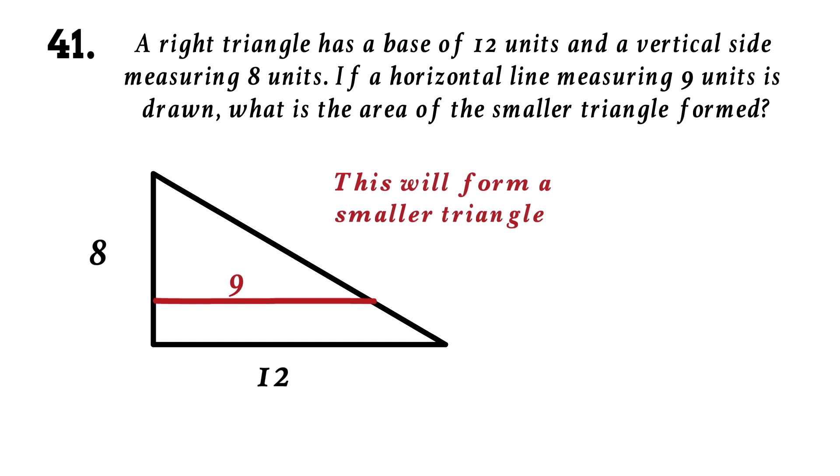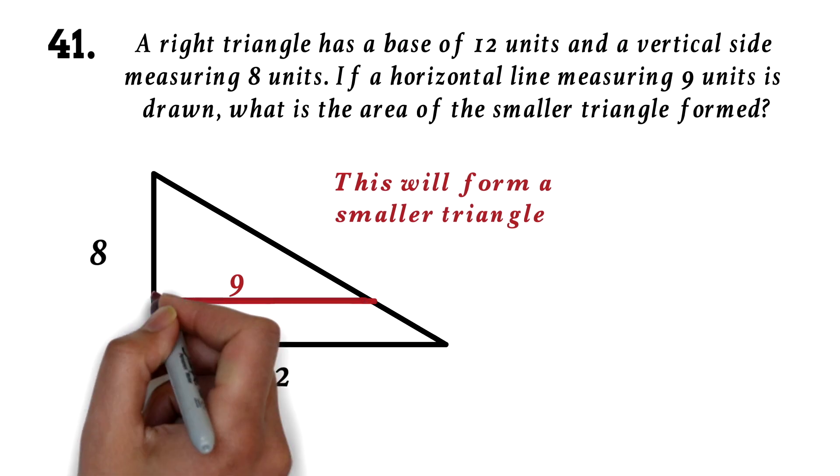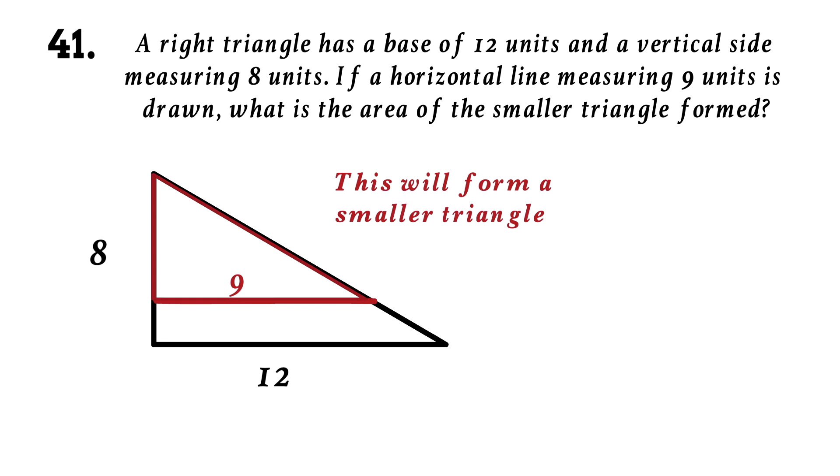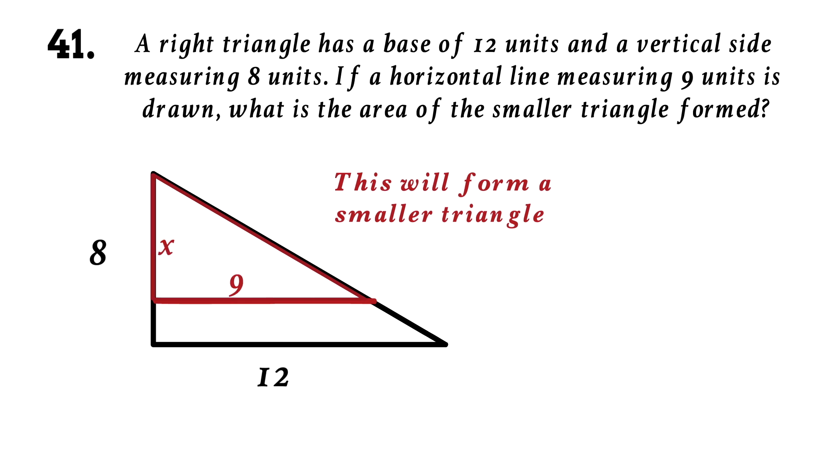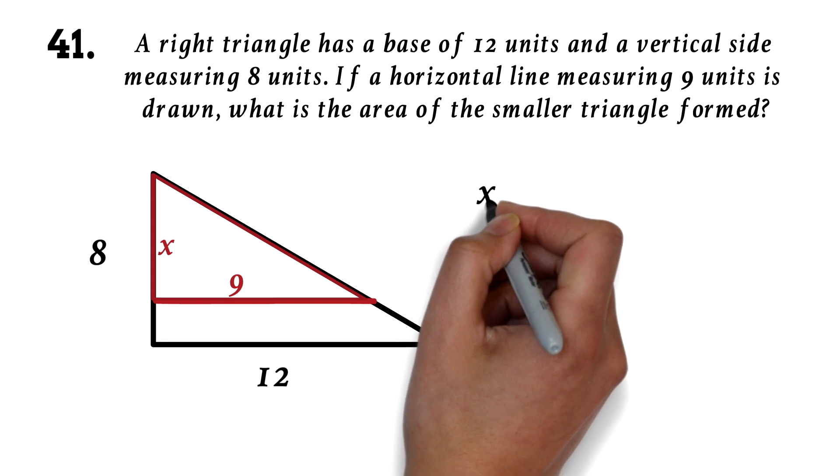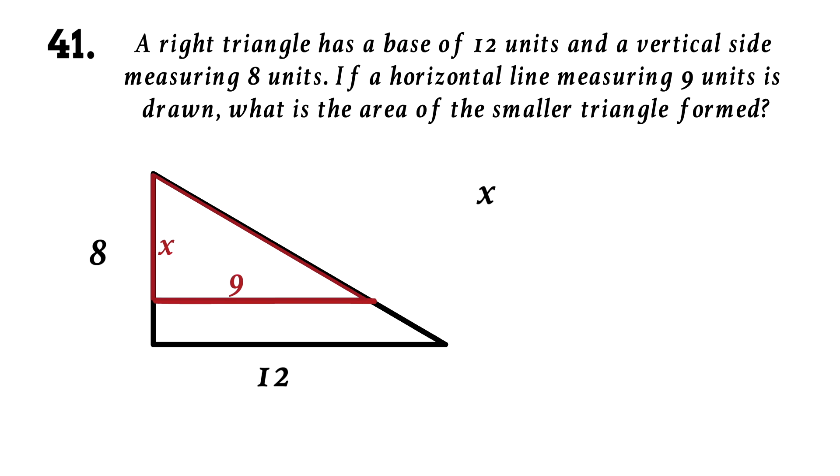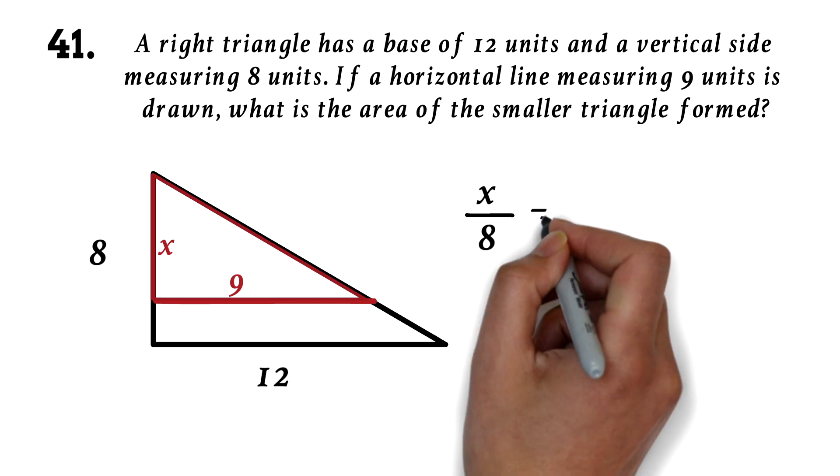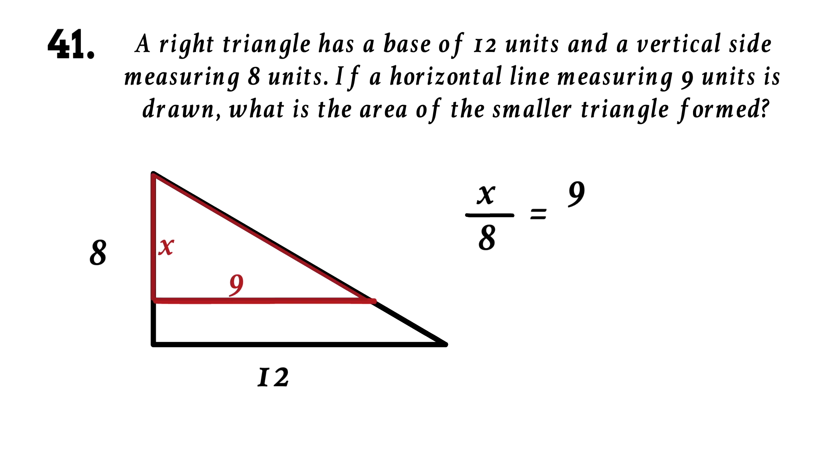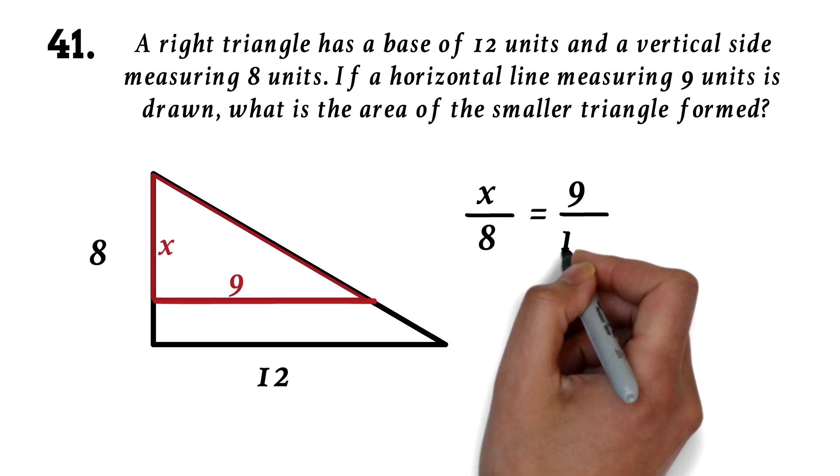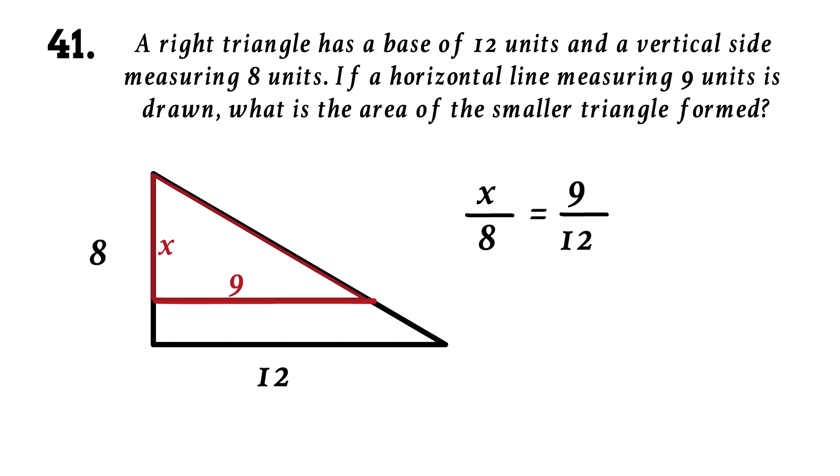This is a question on similar triangles. We will post a video specifically on GED triangles, so watch out for it. The rule is, if you have similar triangles, then corresponding sides are proportional. Let's call the side of the smaller triangle x. So x, which is the side of the smaller triangle, over 8, which is the side of the bigger triangle, is equal to 9, which is the base of the smaller triangle, over 12, which is the base of the bigger triangle.